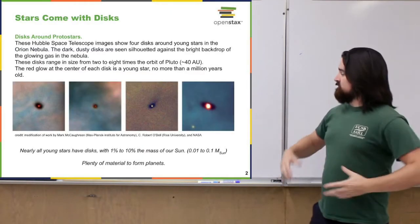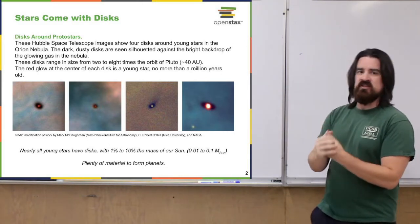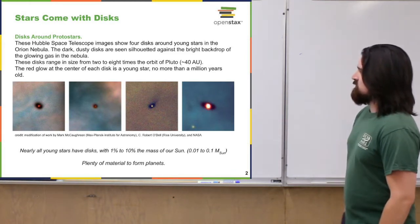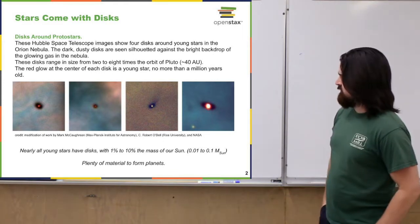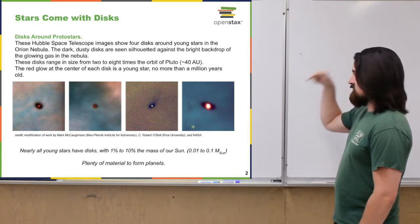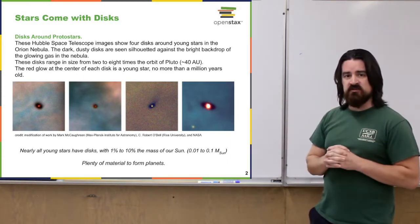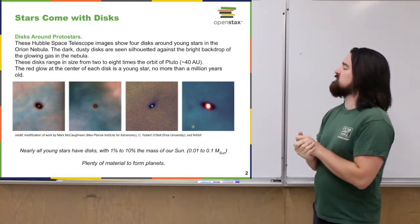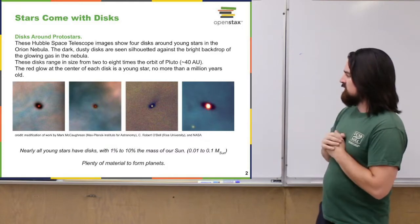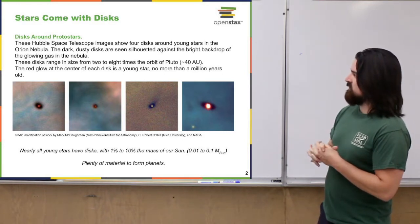As I pointed out last time when we were talking about the birth of stars, they pretty much always come with these discs around the equator of the star. Here we have some images of discs — these are in the Orion Nebula, just some stars in the process of forming. They all have dark discs around them; that's dust, and it's generally dark because light doesn't go through it. If you looked in the infrared, that dust might be glowing — it might be heated up.